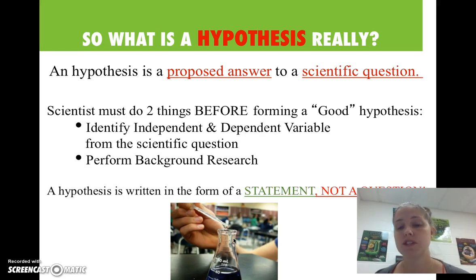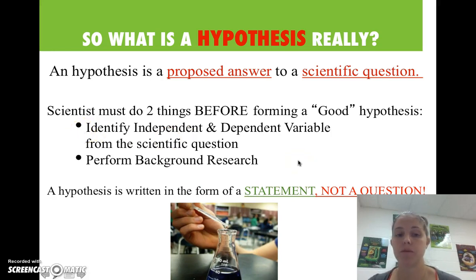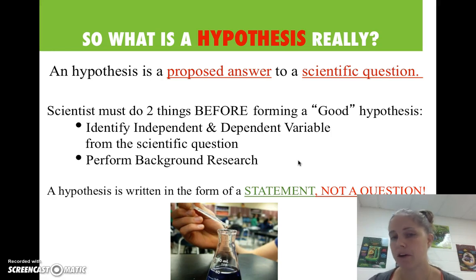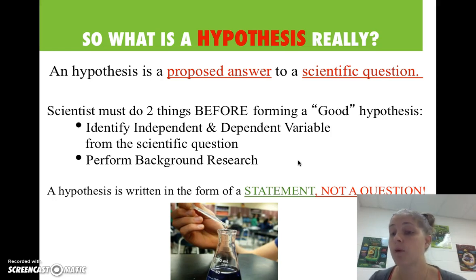Before we write a good hypothesis, we need to identify the independent and dependent variable from the scientific question or from the scenario. Then we need to perform some background research — research our question and try to learn as much about our variables as possible, and make a good guess at what the cause and effect relationship might be.